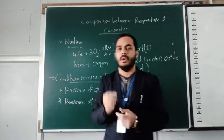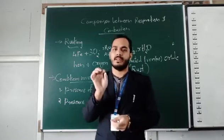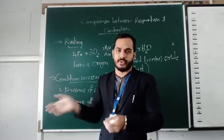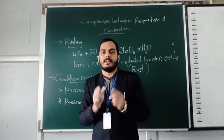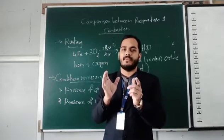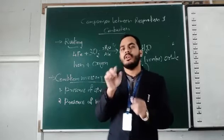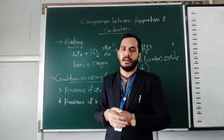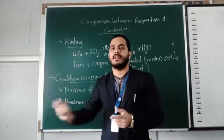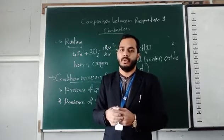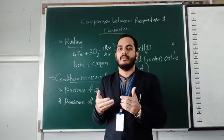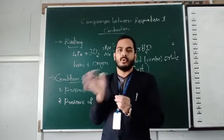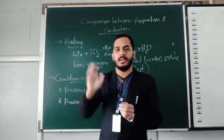To repeat: when an iron object is exposed to air and moisture, the iron surface gets a reddish-brown powder. That reddish-brown powder is called rust, and this process is called rusting. It is not a quick process — it is slow and can take a few months or even a few years.